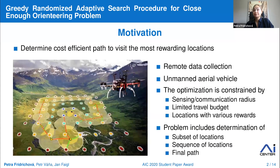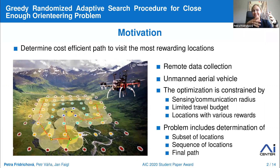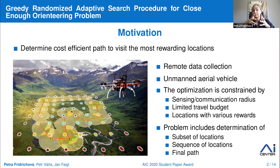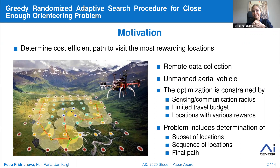Here we see several locations that might represent sensors or wireless detectors, and our goal is to collect data from these sensors or communicate with these stations. One effective way is to utilize some kind of unmanned aerial vehicle — here we can see a drone. In practice, the vehicle has only a limited battery or limited fuel, which doesn't allow visiting all of these locations. Therefore, we select only a subset of these locations based on their importance.